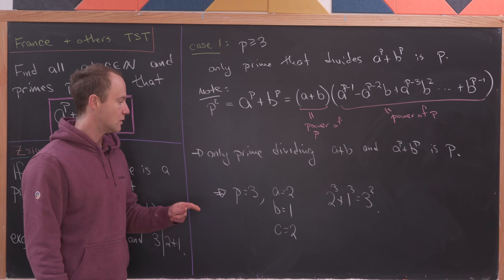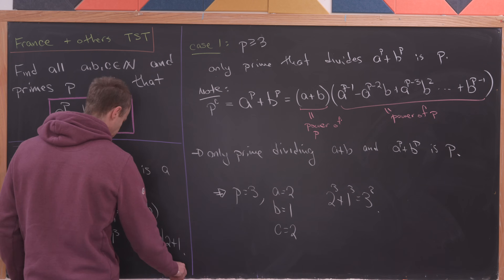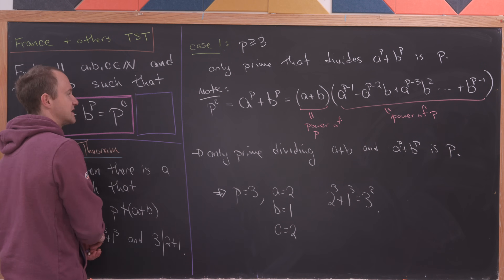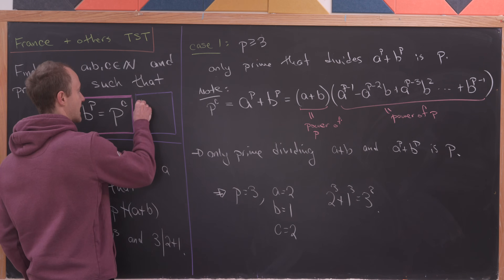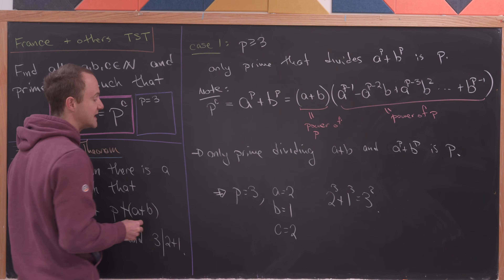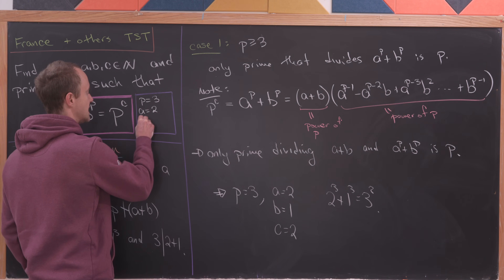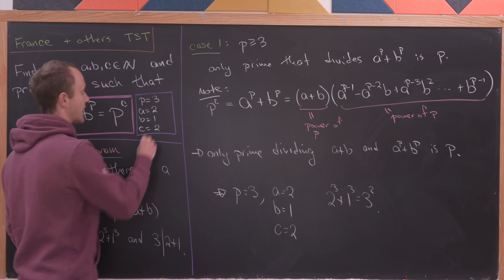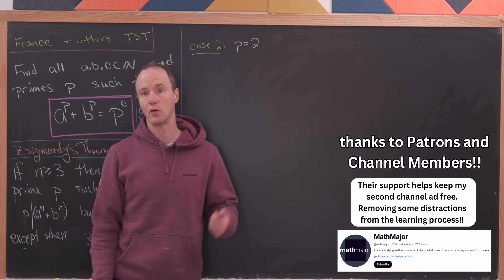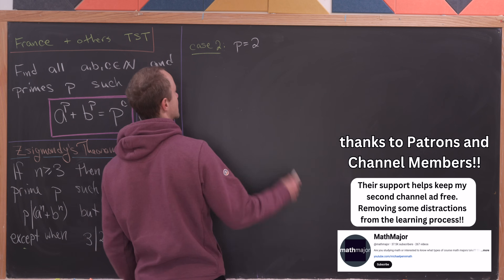We've got one set of solutions. Now let's move on to the other case: p equals 2, the only even prime.